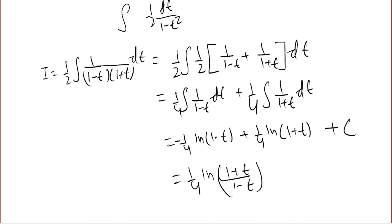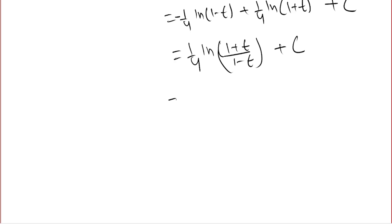Now we can substitute t equal to tan square x, giving the final answer: 1 over 4 ln of 1 plus tan square x over 1 minus tan square x plus c.